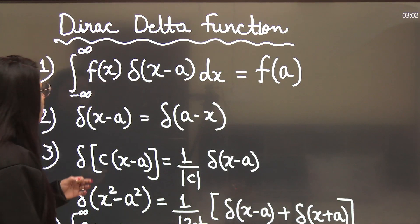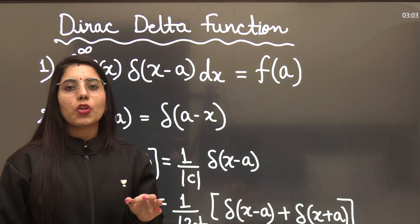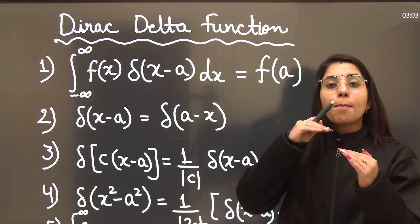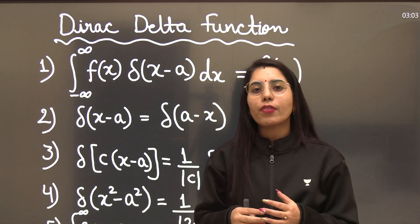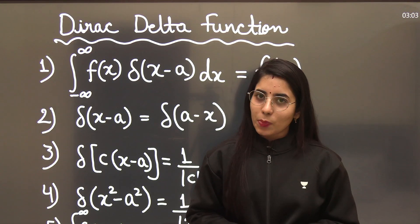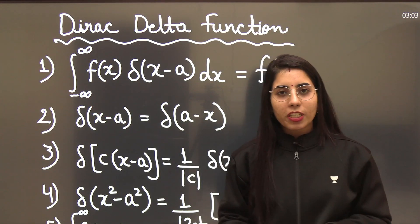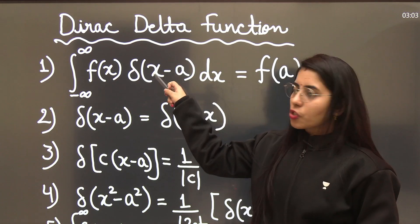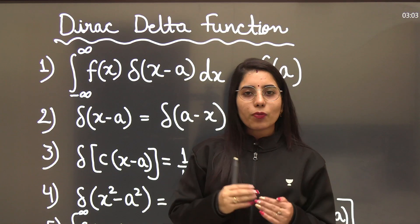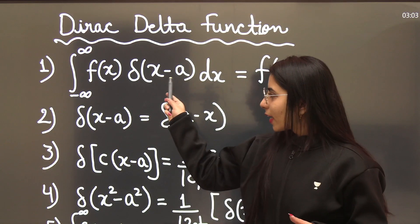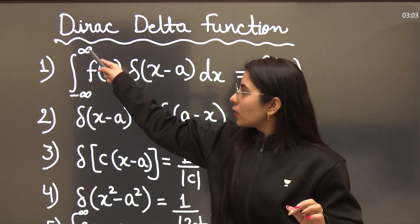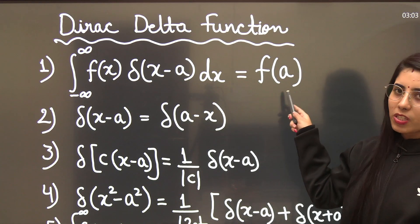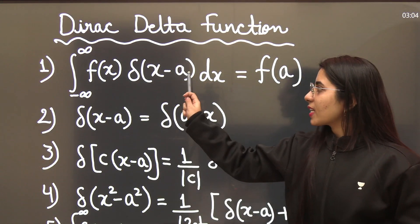Here we are going to talk about the first property. If you have an expression in terms of the Dirac delta function — that is, integration from minus infinity to plus infinity of f(x) times δ(x−a) dx — what you do initially is equate the bracket term x−a with 0, giving x = a. If this value of x lies within the given range of integration, you simply write the function's value at that point: f(a).